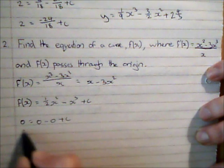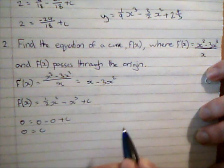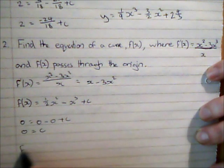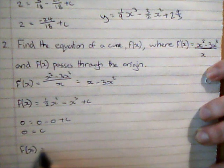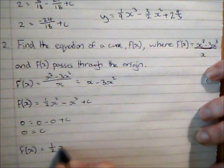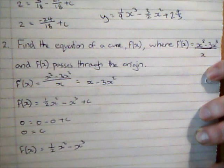Which is quite easy because it means that the value of c is 0. And so the equation of my curve f(x) is a half x squared minus x cubed.